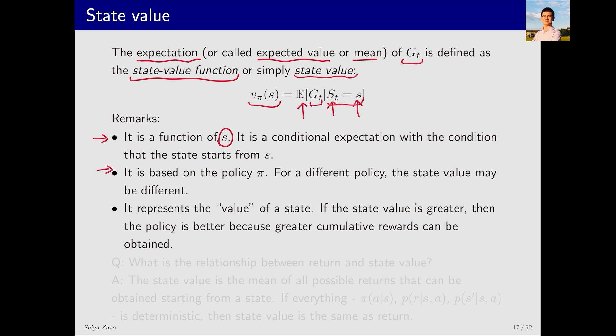Second, it is based on the policy π. This function can also be expressed as v(s,π), placing π as a variable within the parentheses. But, for simplicity, we use v_π(s), with π positioned in the subscript. It is obvious that different policies result in different trajectories, which in turn lead to different returns and consequently different state values.